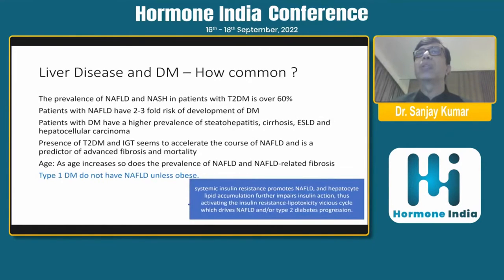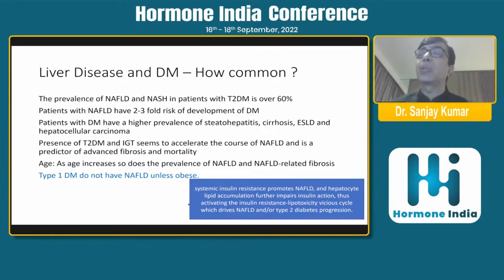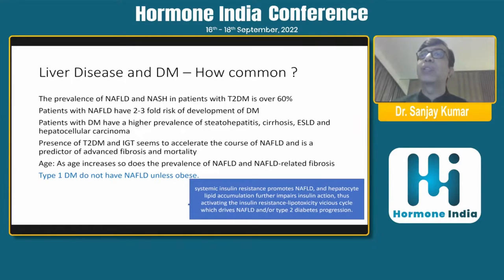The prevalence of NAFLD and NASH in patients with diabetes is over 60%. Patients with NAFLD have a two- to three-fold risk of developing diabetes, and the reverse is also true — patients with diabetes mellitus have a higher prevalence of steatohepatitis, cirrhosis, end-stage liver disease, and HCC. Presence of diabetes and impaired glucose tolerance accelerates the course of NAFLD and is a predictor of advanced fibrosis and mortality. Interestingly, type 1 diabetes mellitus patients do not have NAFLD unless they are obese.